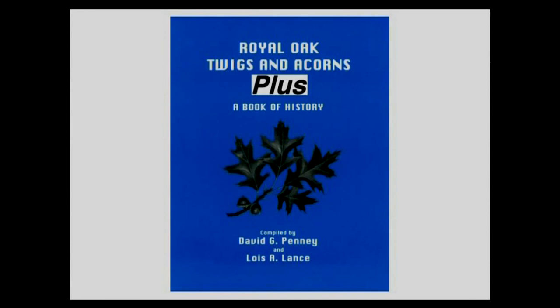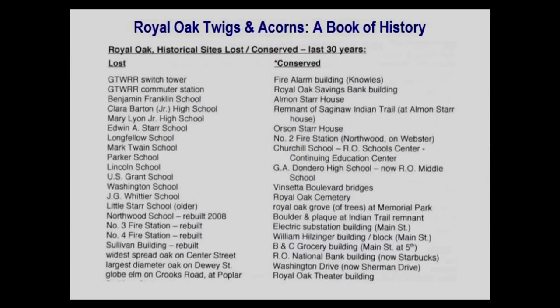Twigs and Acorns Plus, the newer book, contains additional information. I've listed some of the things in the last 32 pages that bring it up to date until the end of 2007. There's a list of Royal Oak historical sites that have been lost and those that have been conserved, because things can be lost very quickly — a bulldozer can go out and destroy something legally very fast and it's gone. Sometimes you hardly know what was there before.